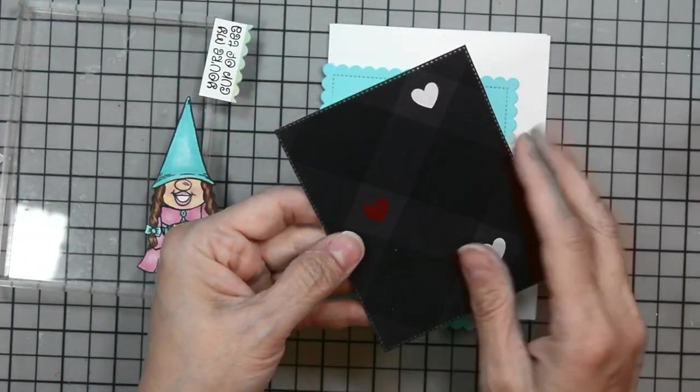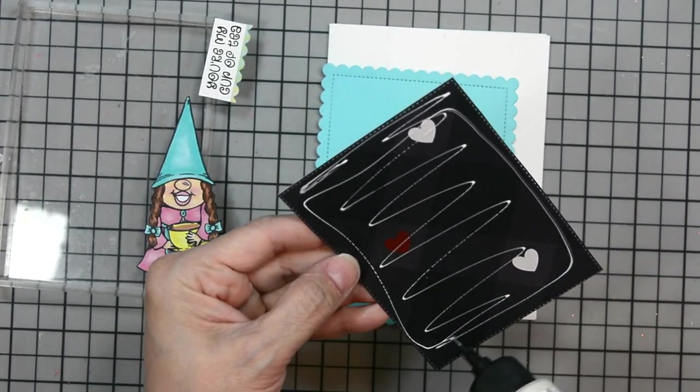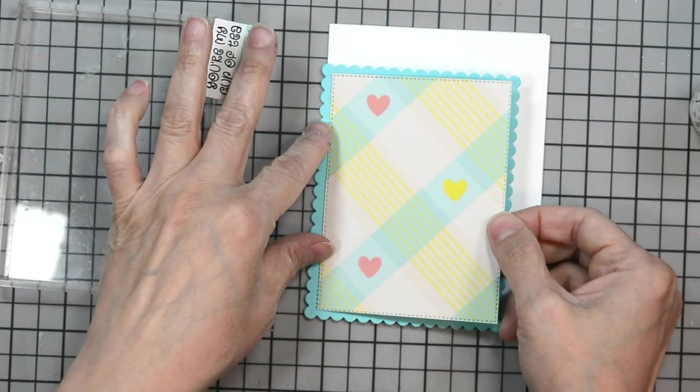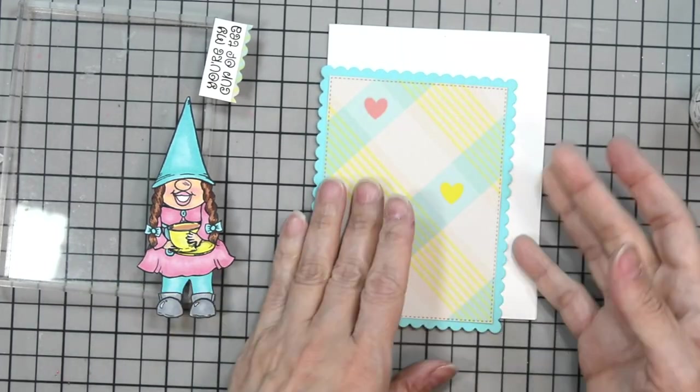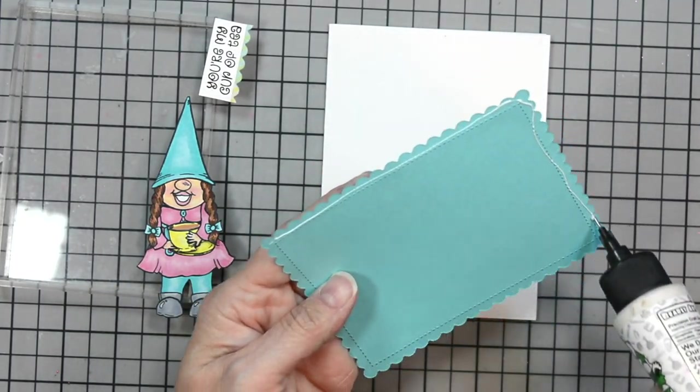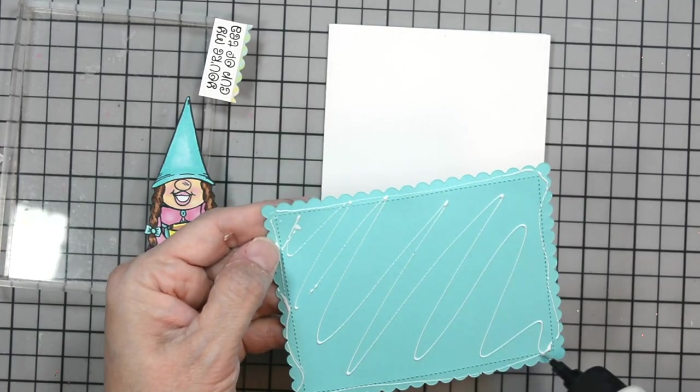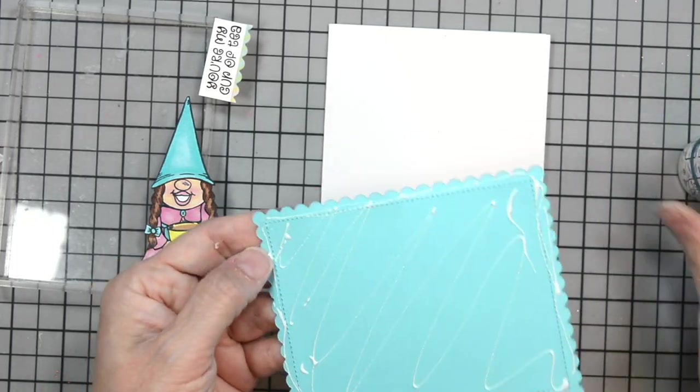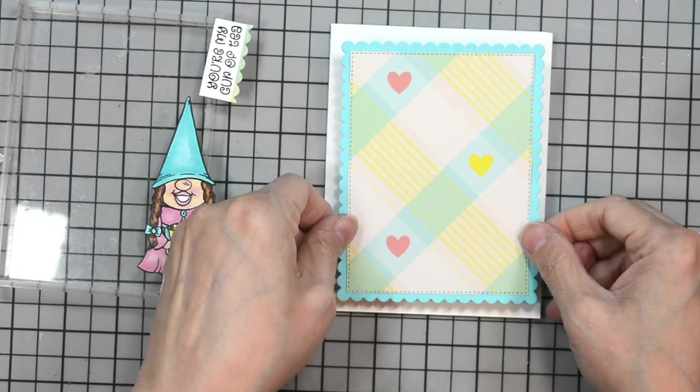Now we're going to bring in some liquid adhesive and adhere this patterned paper from our Tea Party collection. This is easy to line up because all the lines are there—it's cut using the same die. We're going to adhere this onto our card base.